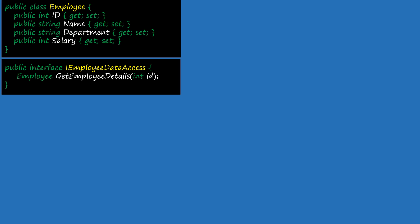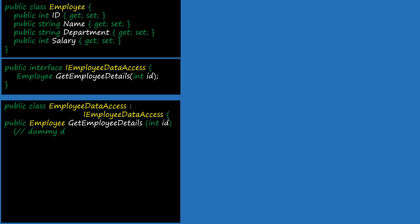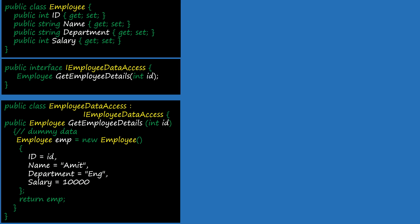Now it's time to implement that abstraction in the dependent classes. The first dependent class is EmployeeDataAccess: public class EmployeeDataAccess, inheriting from IEmployeeDataAccess. This class is now forced to implement the getEmployeeDetails method. Other things are similar — public Employee getEmployeeDetails, populating the same dummy data and returning the employee object. The details — the methods responsible for implementing actual functionality — are now dependent on the interface. Our details are dependent on abstraction.